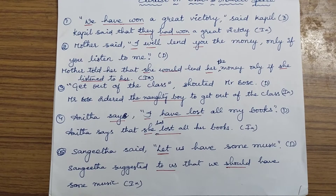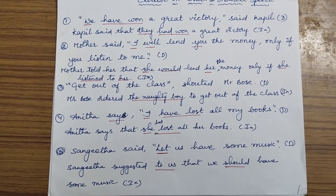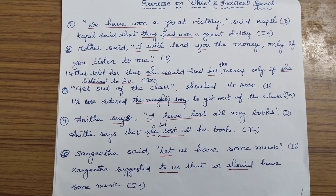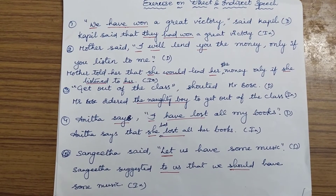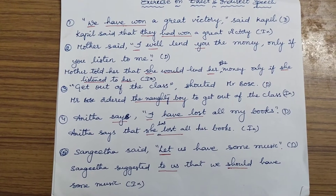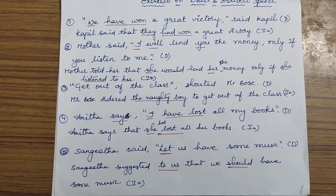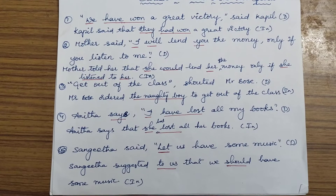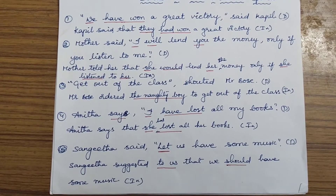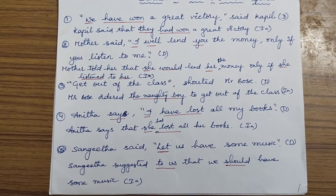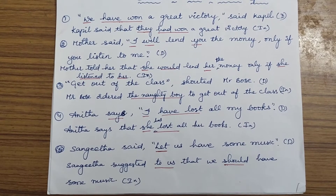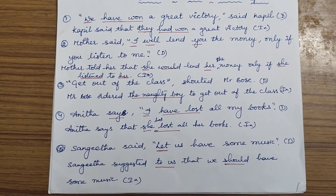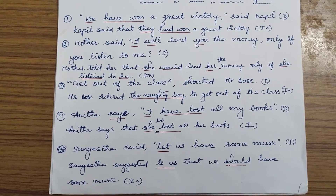'Get out of the class!' shouted Mr. Boss. Mr. Boss ordered the naughty boy to get out of the class. You can include 'the naughty boy' depending on the situation. Since it is a command, you should use a reporting verb like 'ordered.' So: 'Mr. Boss ordered the student to get out of the class.'